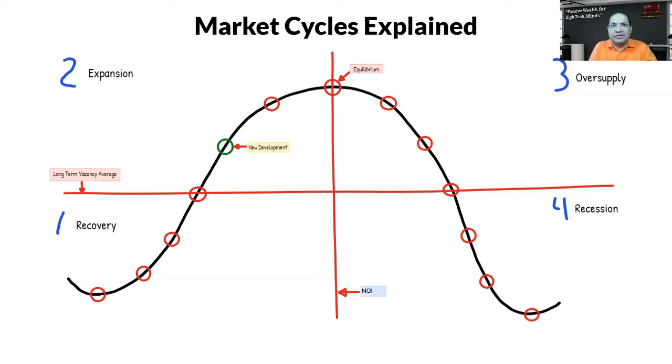When a market gets above the long-term occupancy average and is on the left side of equilibrium, it is considered to be in the expansion phase. New construction starts here because developers see that there is enough meat on the bone that they can make some money and build apartment complexes. As they build, rents are still climbing because they are not delivering yet.